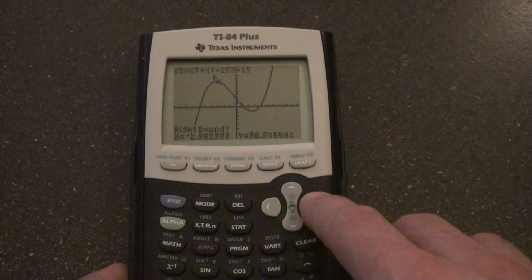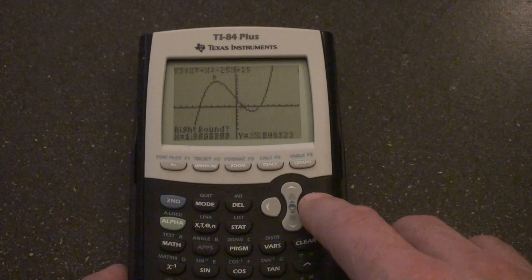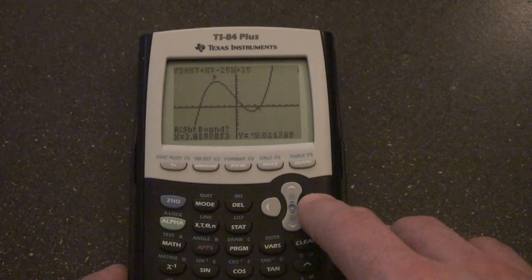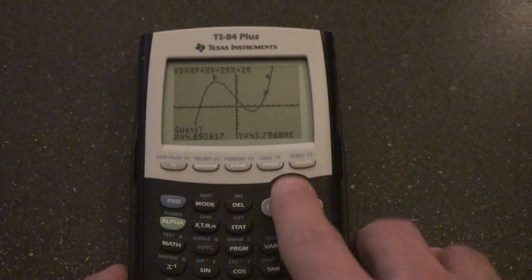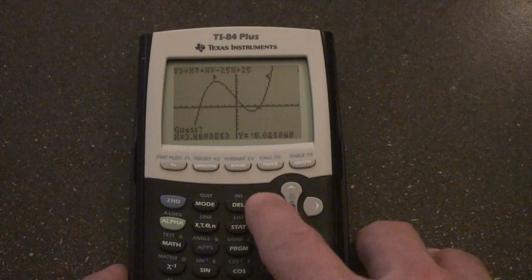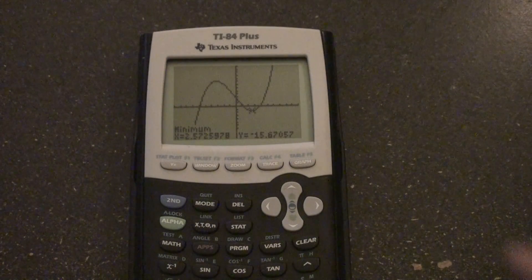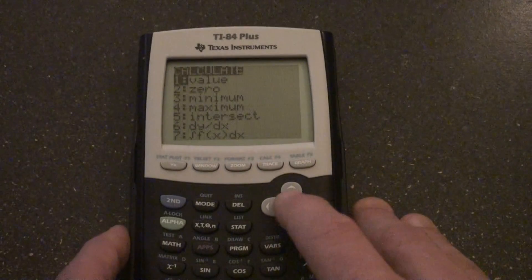So left bound, and then we're going to go to the right side of that minimum point, and then we're going to take a guess right over there, and there we are. Then to find the x-intercepts, second, calculate.